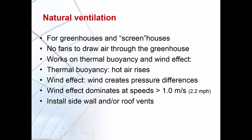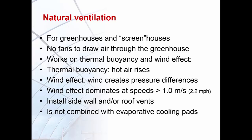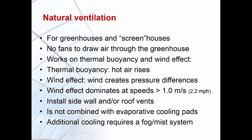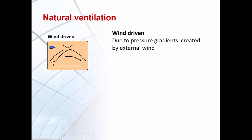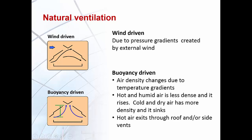Growers need to install sidewall and/or roof vents to achieve proper natural ventilation rates. Natural ventilation systems are not combined with evaporative cooling pads; if additional cooling is required, a fogging or misting system must be installed. There are two types of natural ventilation: wind-driven ventilation due to pressure gradients created by external wind, and buoyancy-driven ventilation, sometimes called the chimney effect.